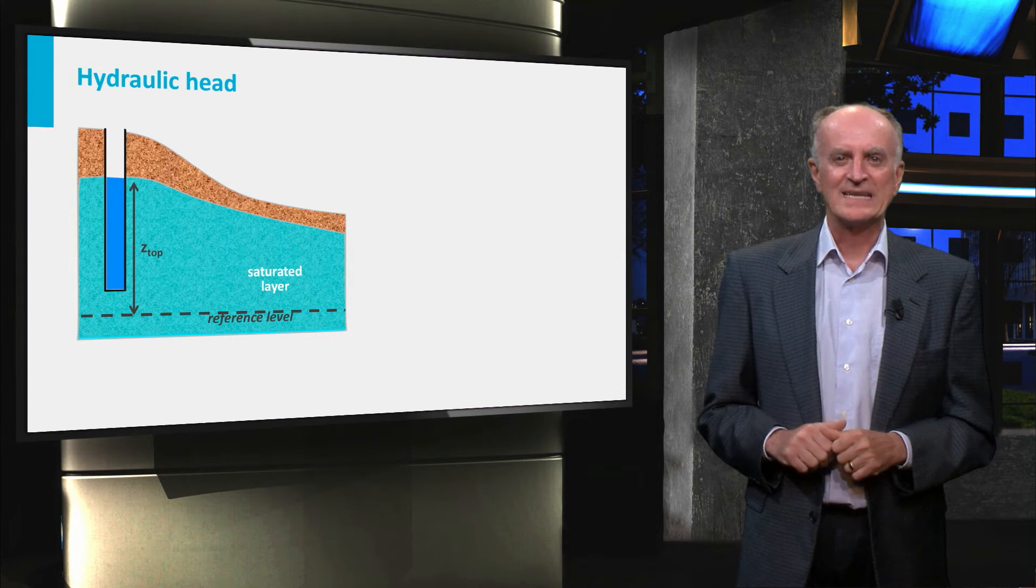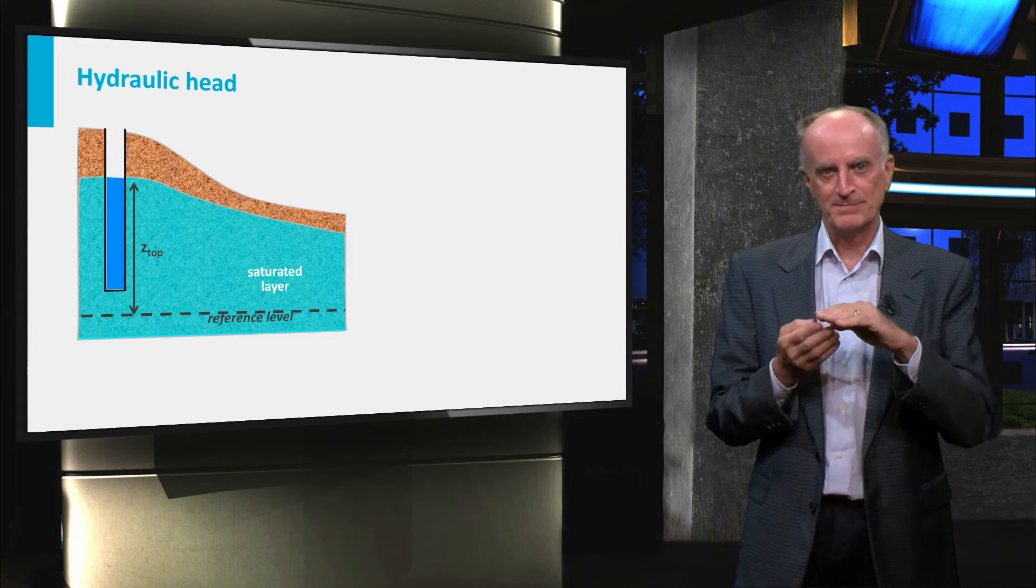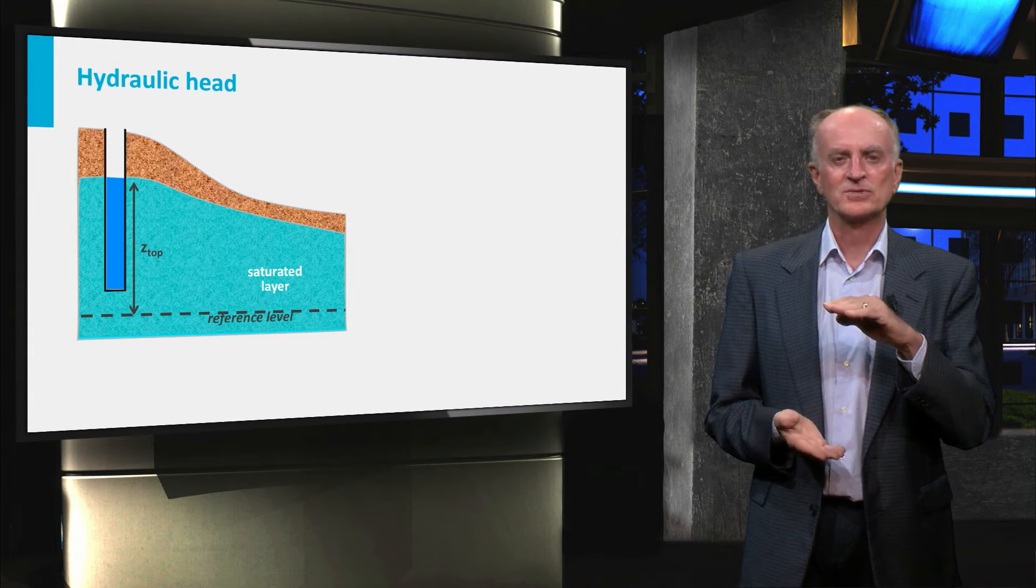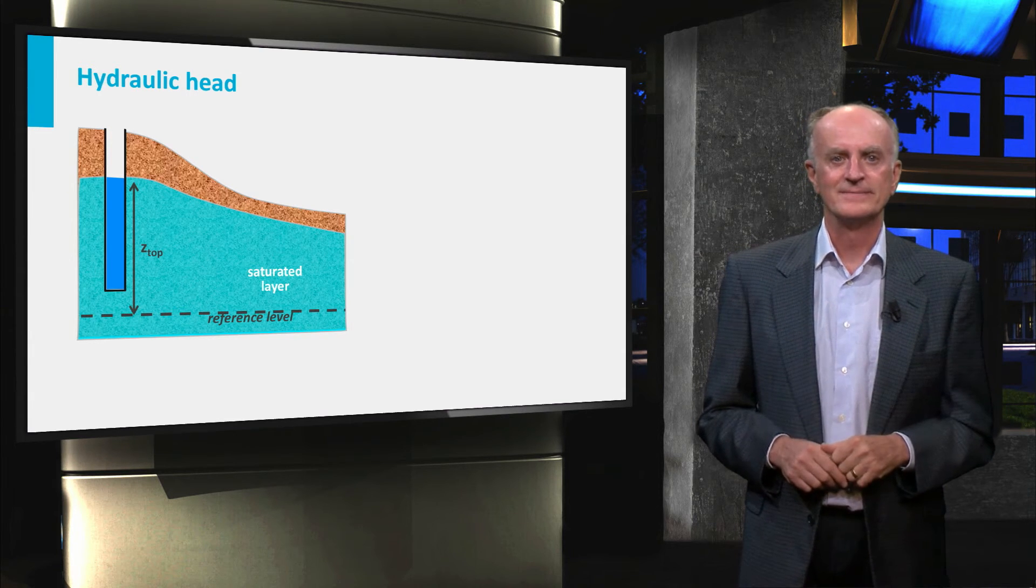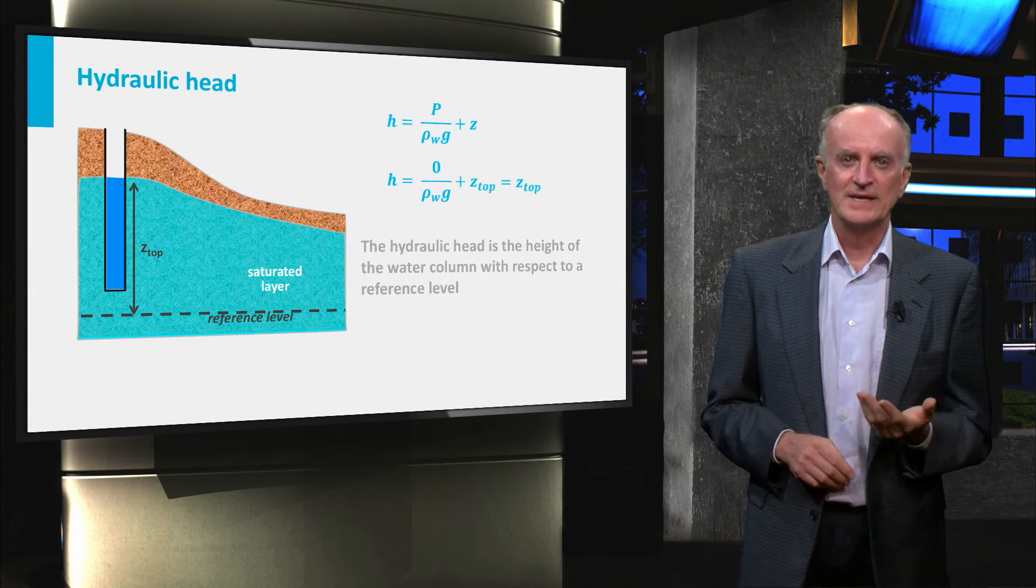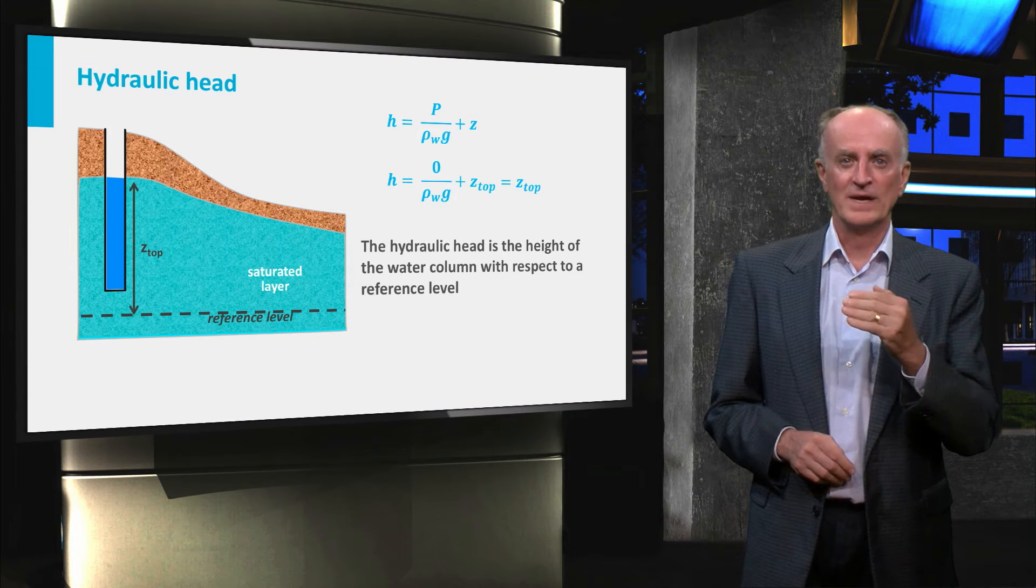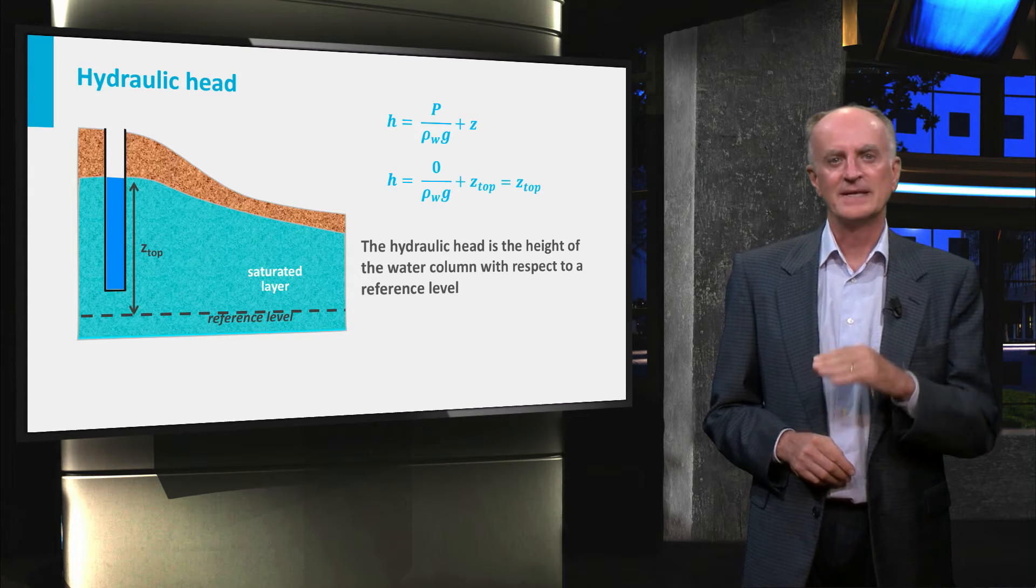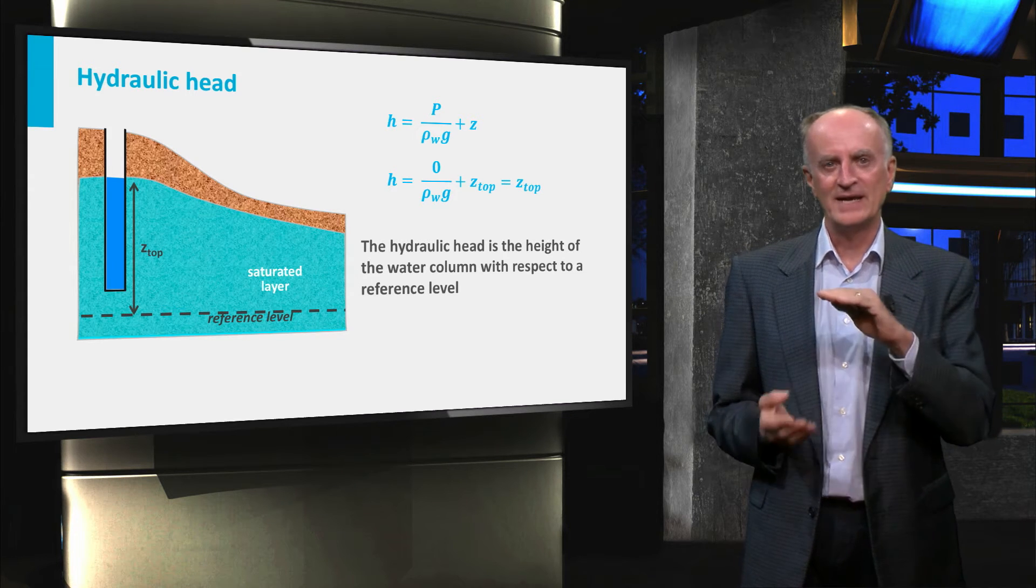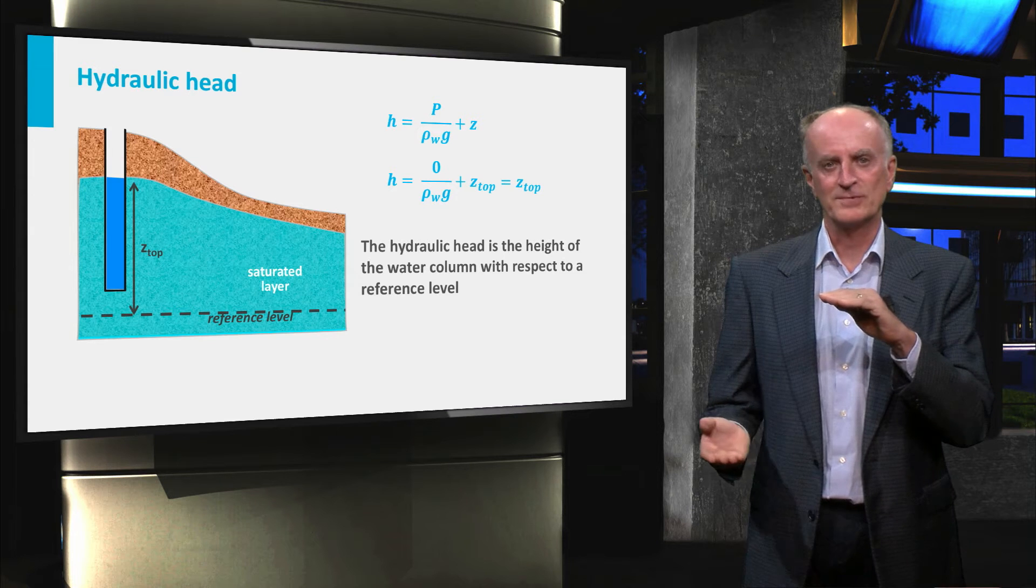We will call Z top the height of the water level with respect to a reference horizon, which is also indicated in the figure. Using the head equation and assuming that the pressure at the top of the water column in the well can be neglected, you can see that the head is equal to the height of the water level with respect to the reference horizon.